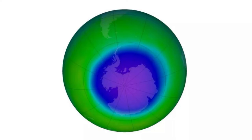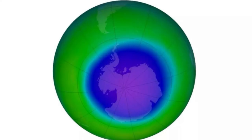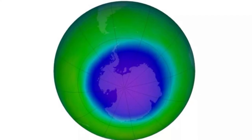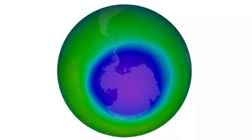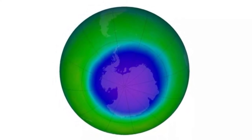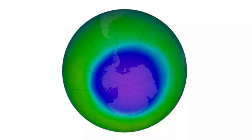Scientists discovered the thinning ozone layer over Antarctica in the early 1980s. Although ozone is created and destroyed naturally in the stratosphere, human-driven pollution destroys ozone faster than it can form. In particular, industries that use chlorine or bromine, like refrigeration and air conditioning, destroy ozone at alarmingly high rates.